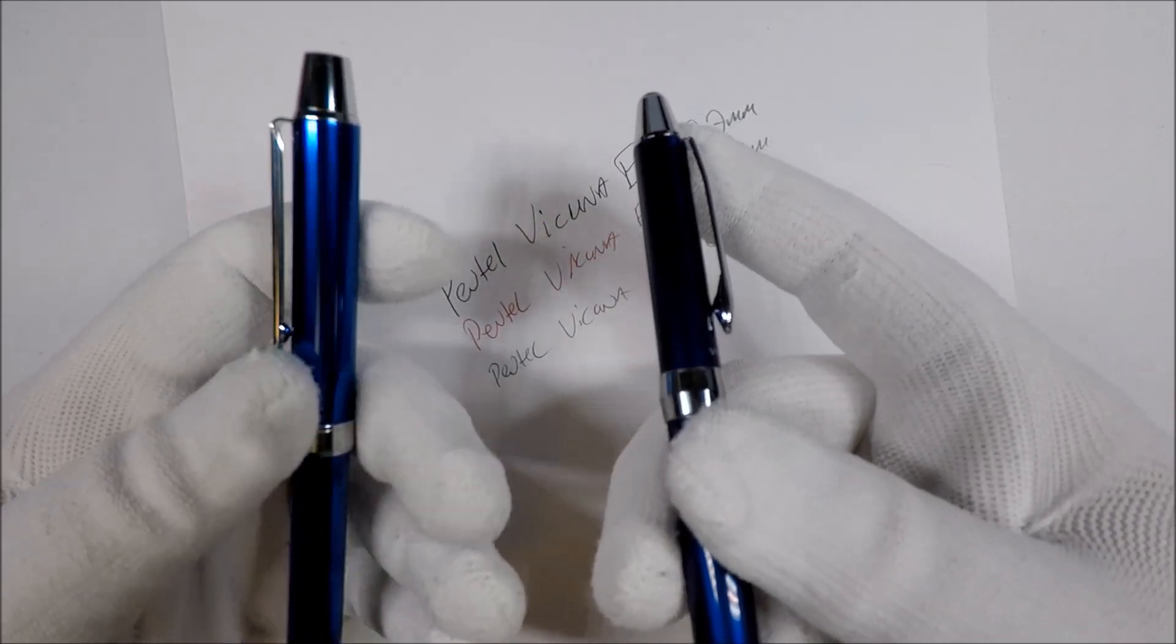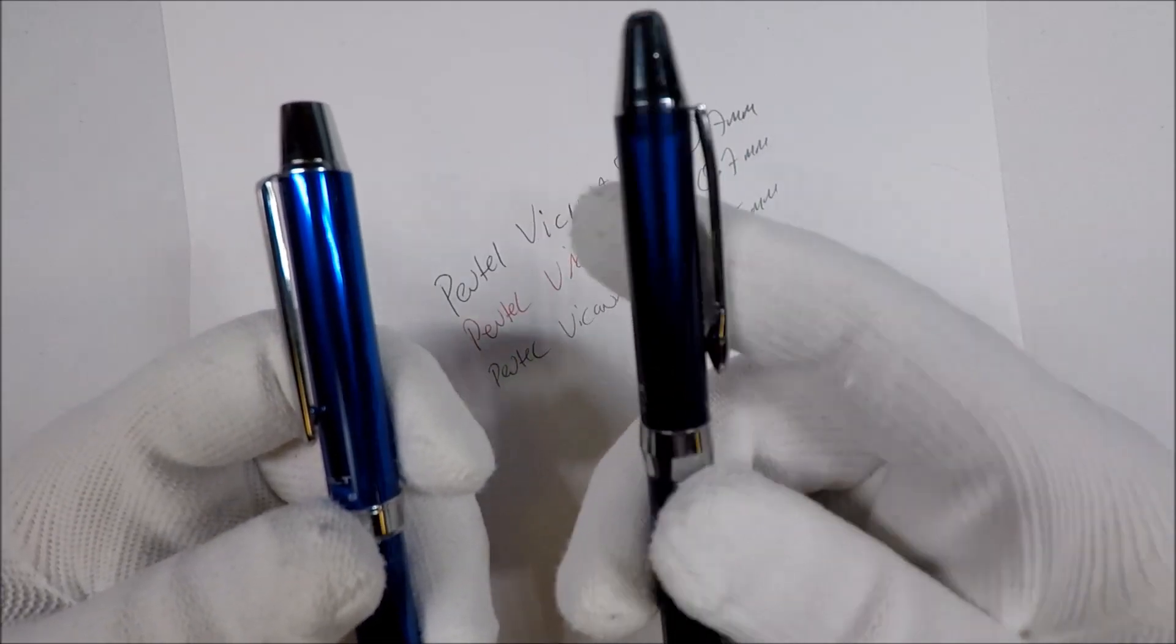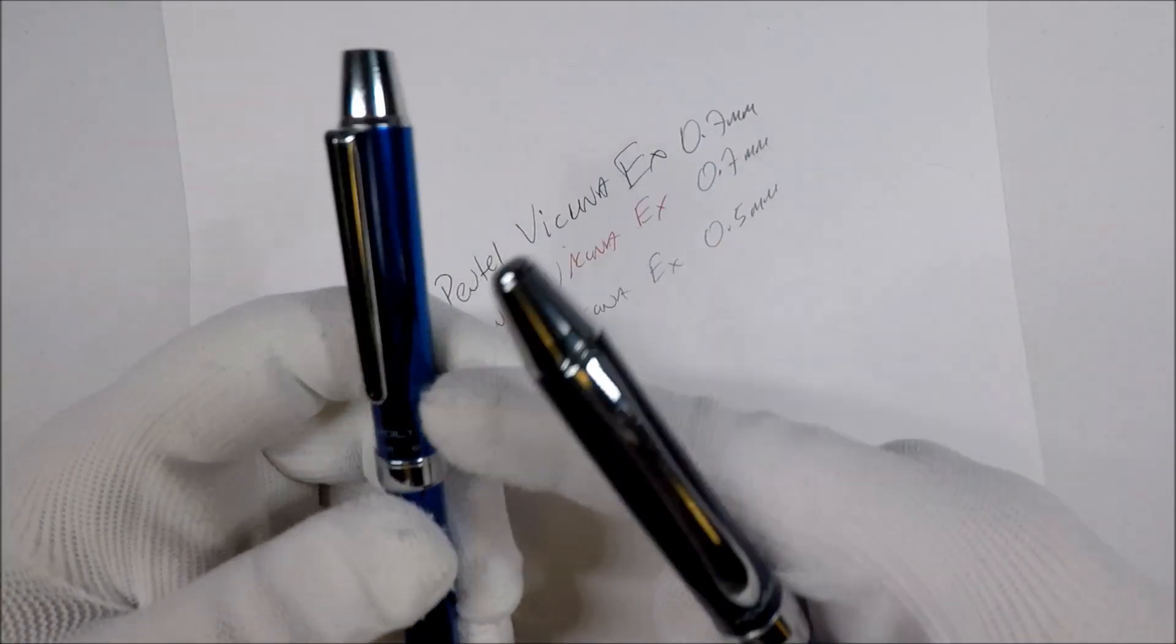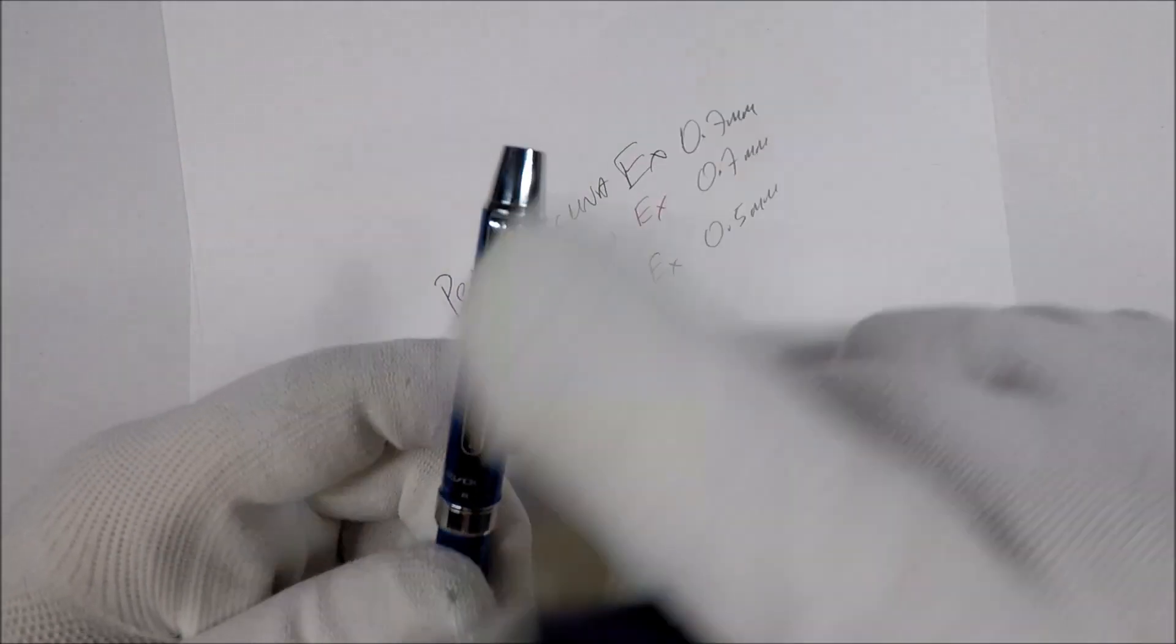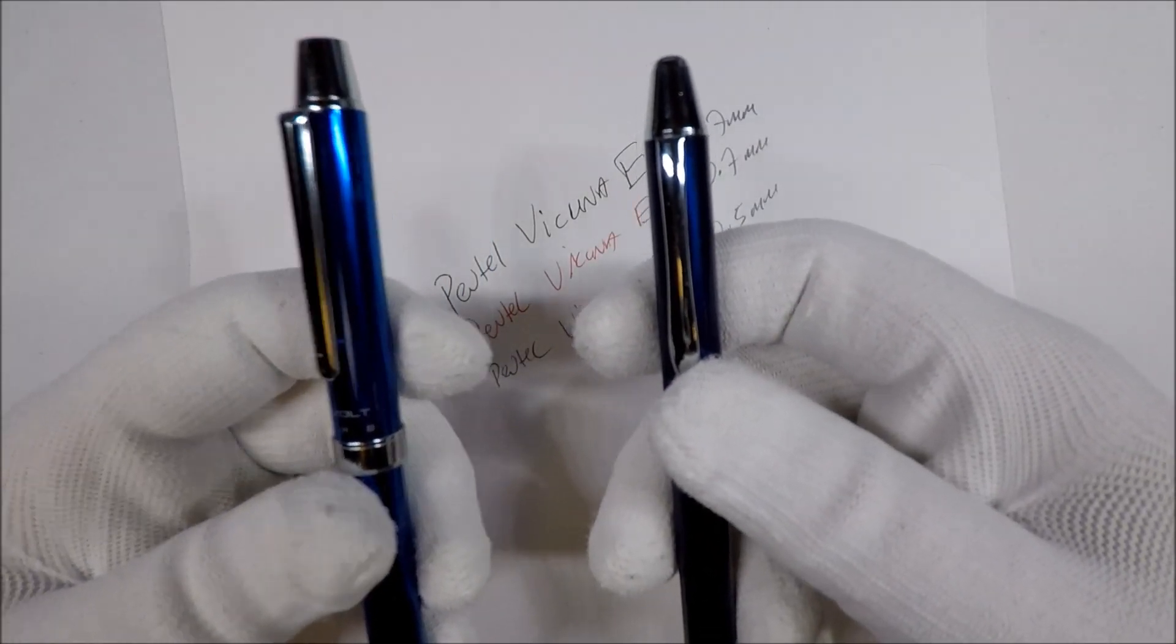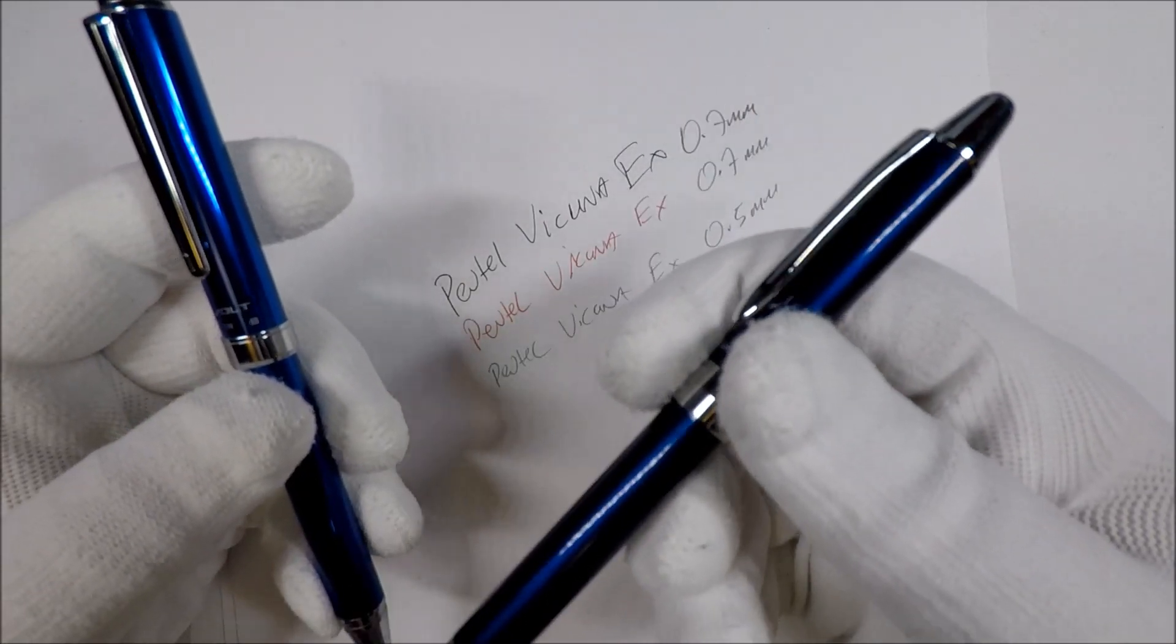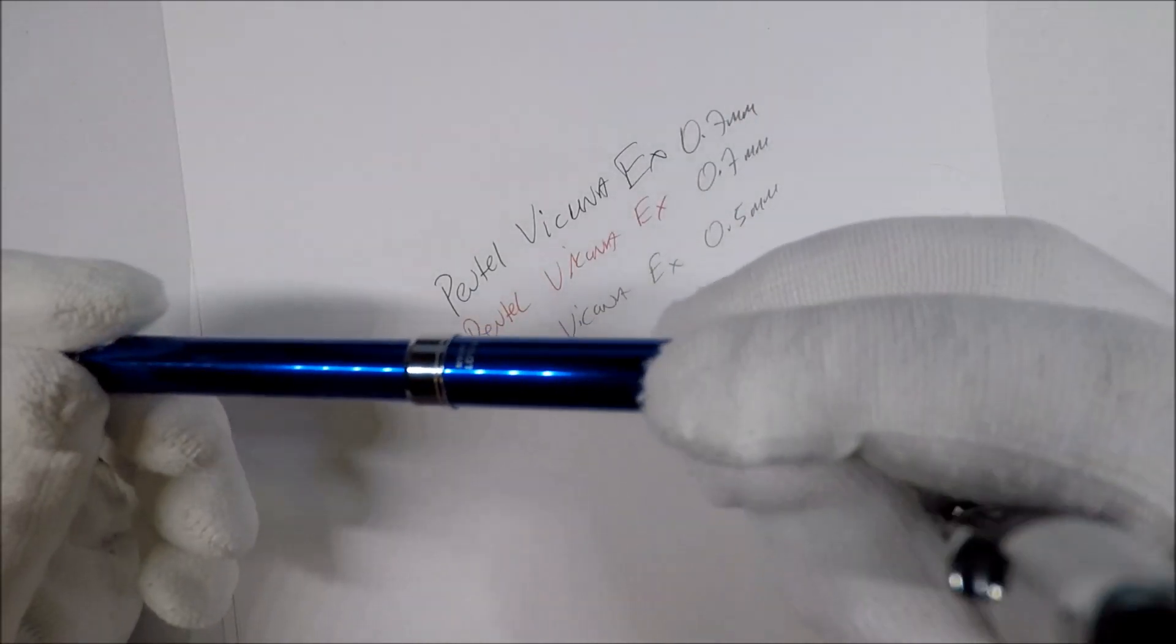I'll tell you one thing though, the Vicuna is like 10, 11 dollars. Maybe you can find them cheaper. And the E-Volt was a bit more expensive when I picked it up. I knew that when I saw this, it reminded me of something and it ended up reminding me of the E-Volt.